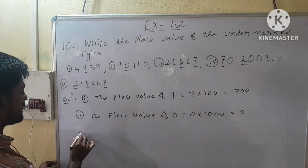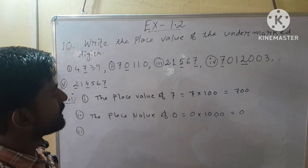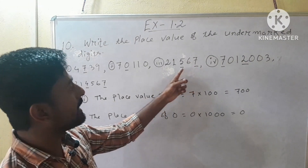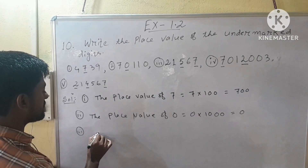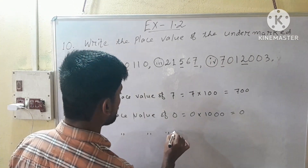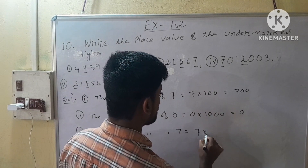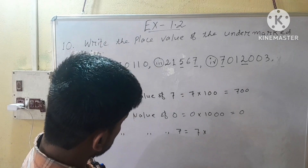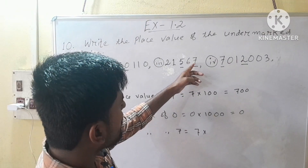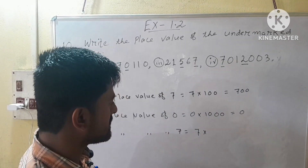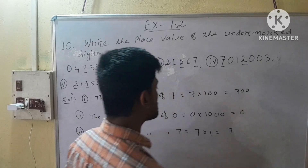Next, roman number 3 — here we have to find the place value of 7 and 5. So first we find the place value of 7. The place value of 7 is equal to 7 into 1. After 7 we have no digits, so 7 into 1 is equal to 7.